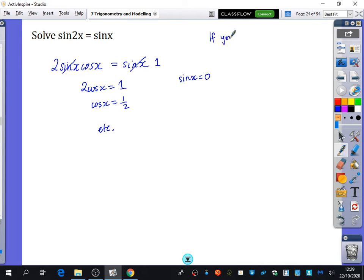So if you cancel something out in an equation, a solution is also that it can equal 0. So I cancelled out sin(x) and it could be equal to 0.